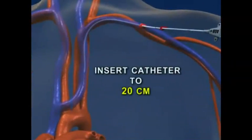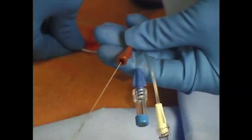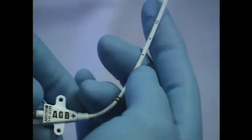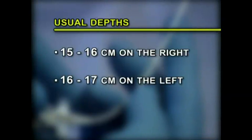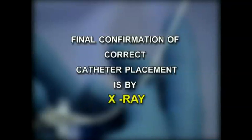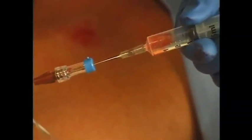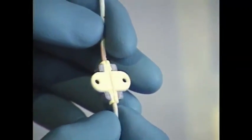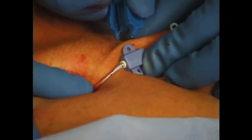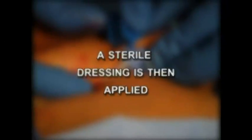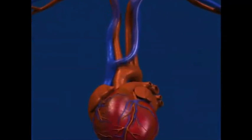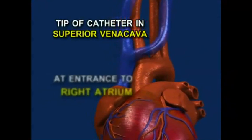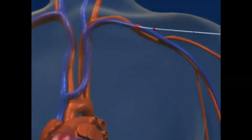Once the catheter has been inserted to 20 centimeters, the wire is removed. The catheter can then be positioned at the appropriate depth; it has markings indicating the centimeters distal to the insertion site. Usual depths are 15 to 16 centimeters on the right and 16 to 17 centimeters on the left. Final confirmation of correct catheter placement is by x-ray. Each port is then aspirated and flushed with sterile saline. The catheter is secured in place by placing the catheter holder on the catheter and securing it to the skin with staples or sutures. A sterile dressing is then applied. A chest x-ray is obtained to look for an iatrogenic pneumothorax and confirm correct line position. The optimal position is to have the tip of the catheter in the superior vena cava at the entrance to the right atrium, but placement anywhere in the superior vena cava is acceptable.